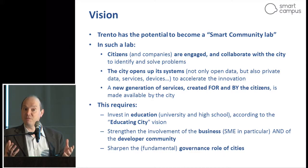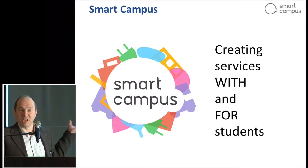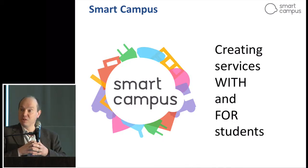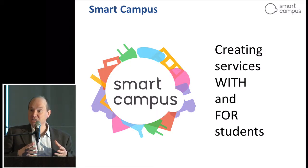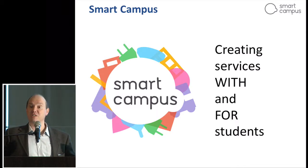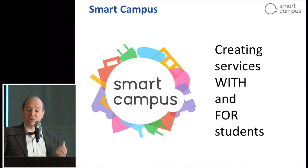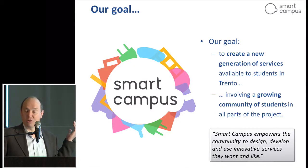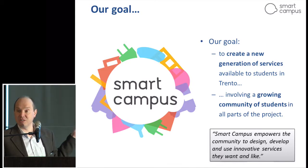What I said before can seem very ambitious, and if we don't have a proof that this concept can be applied, then we are lost. The Smart Campus project is, in my opinion, a proof that this concept can be applied. In Smart Campus, we reduce the Smart City to the campus — using the campus as a scaled-down but complete model of a Smart City. It is complete since we have students who are the citizens, we have institutions, politicians, managers, and the campus also lives in the city. The goal is to create a new generation of services available to students of Trento, involving a growing community of students in all parts of the process of creating these services. We want to empower the student community to design, develop, and use innovative services to solve their own problems.